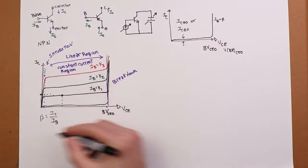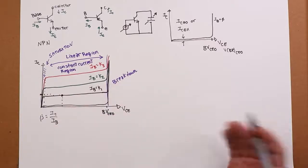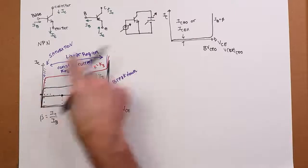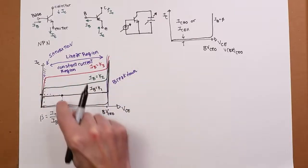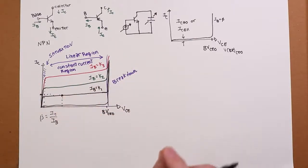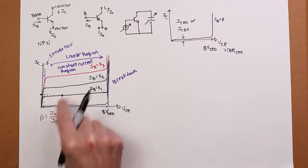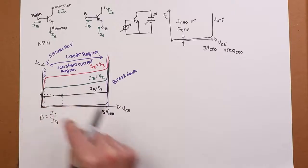And we have a curve tracer in the lab that would allow you to throw a transistor in there and trace out these curves for you. And you could find the specific value for that particular transistor at some voltage, that exact value of VCE. You can figure out what the beta for that transistor is given a certain base current.